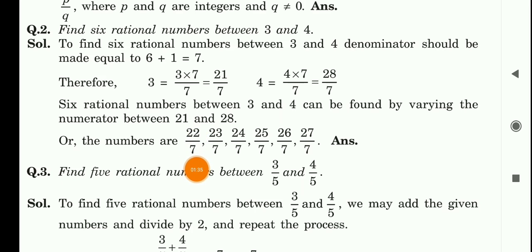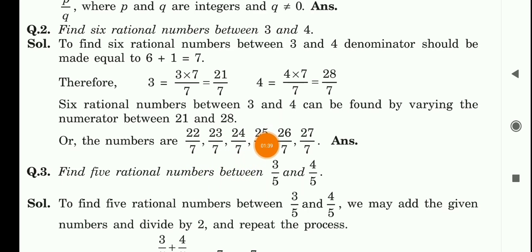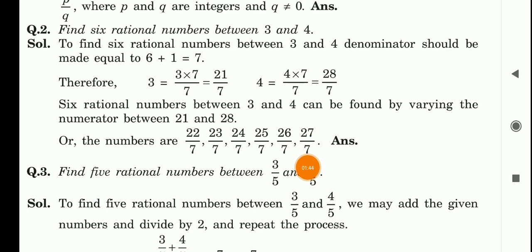So the 6 rational numbers between 3 and 4 are: 22 upon 7, 23 upon 7, 24 upon 7, 25 upon 7, 26 upon 7, and 27 upon 7. यह हमारे 6 rational numbers हो जाएंगे।